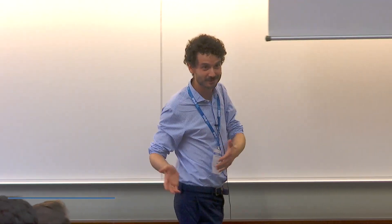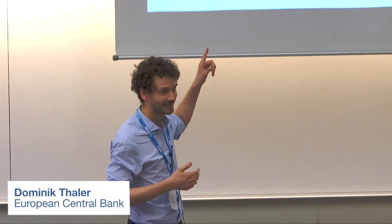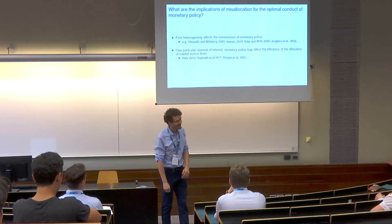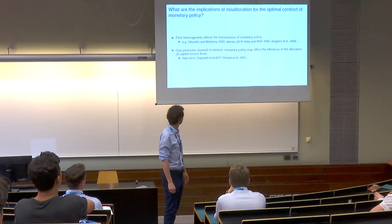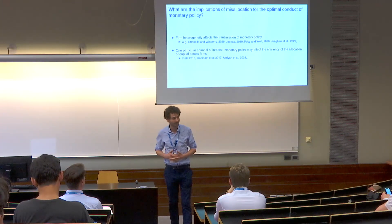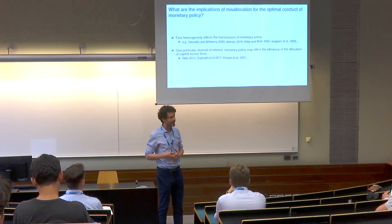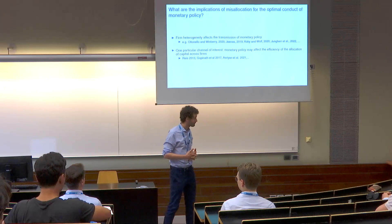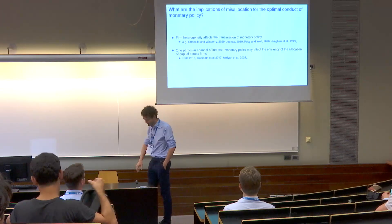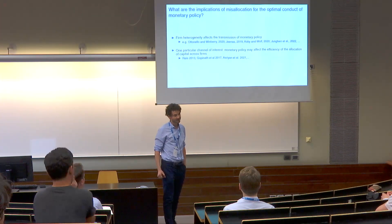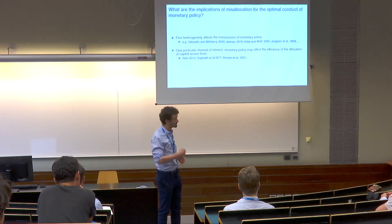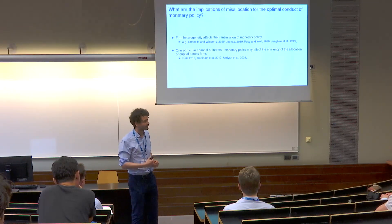As we've just seen, and as the rest of today's session is showing, firm heterogeneity has been shown by a recent active literature to affect the transmission of monetary policy. This raises normative questions. One question that has attracted a lot of attention among policymakers is capital misallocation — a research agenda kicked off by distributions showing, in particular, the paper by Gopinath et al., which showed that low real interest rates may lead to higher capital misallocation.